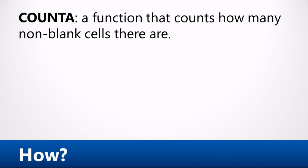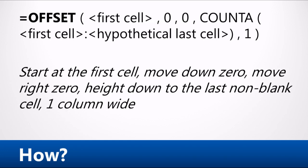So with these two functions together, the OFFSET function starts off at a particular cell and then grows to a particular point. We reference the first cell, then tell it how far to move up and down and left and right — which is none in our particular example — and then count how far down to go. What height do we want it to be? It's going to count all the non-blank cells, and the last argument specifies that it should be one column wide. So let's see this in action.